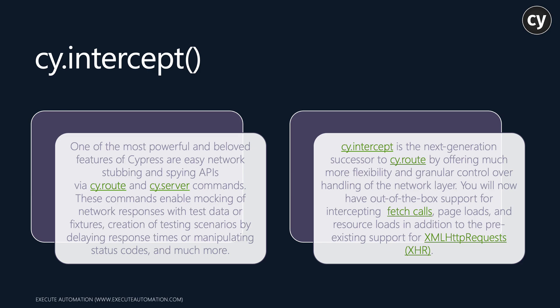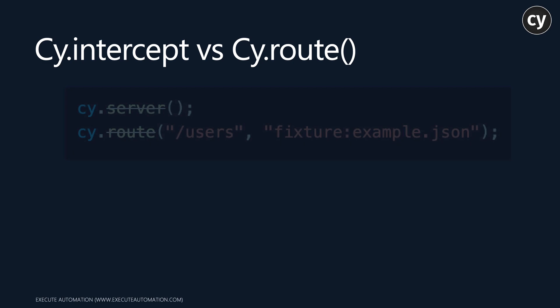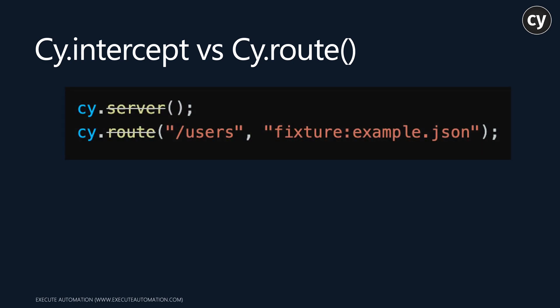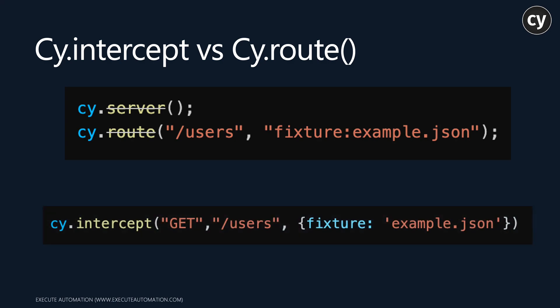There is a very minor difference in terms of syntax if you are already using cy.route and cy.server and are trying to migrate to cy.intercept. If you currently use cy.server and cy.route, you'll probably see an obsolete error in the IDE, because those are not recommended by the Cypress team anymore. You should be using cy.intercept instead. The syntax looks very similar to cy.route, except that you can also specify an additional optional HTTP method — such as GET or POST — as a first parameter to cy.intercept.